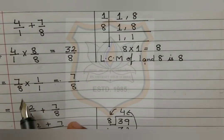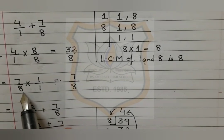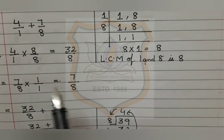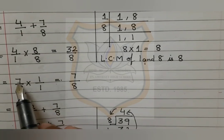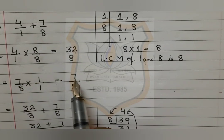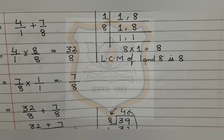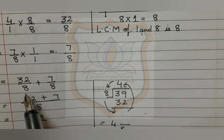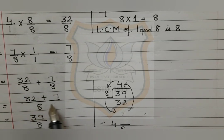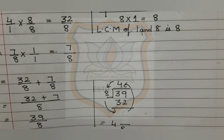The next fraction is 7 upon 8. 8 is multiplied by 1 to stay 8, so the numerator 7 is also multiplied by 1, remaining 7 upon 8. These are now like fractions: 32 upon 8 plus 7 upon 8. We take 8 below the fraction line and write 32 plus 7 above it. 32 plus 7 equals 39 upon 8.